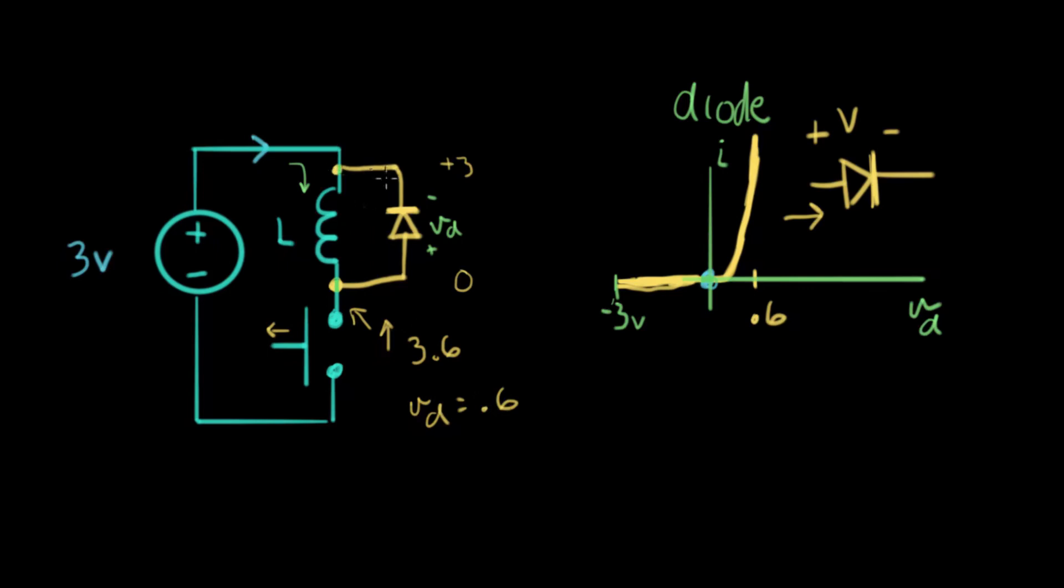This is at 3 volts. This is at 3.6 volts. So V diode is 0.6 volts. And that puts us about here on the curve. And what's going to happen is this current that we had here, this current that was flowing down through this inductor is going to do what? It's going to go this way. It's going to flow this way through the diode. And that's this portion of the curve right here.